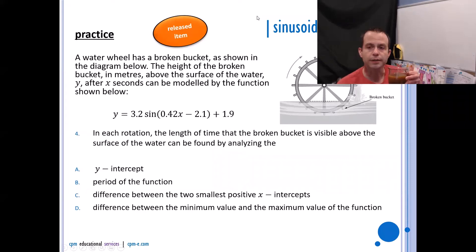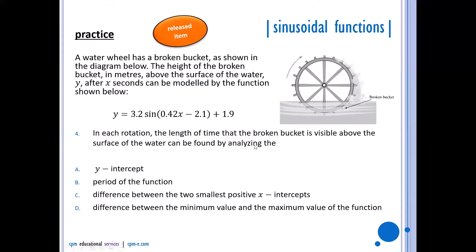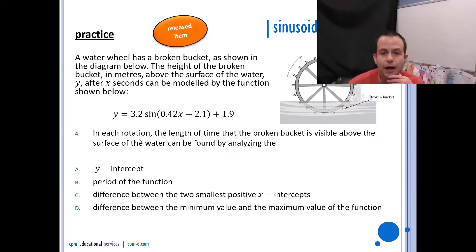The water wheel has a broken bucket as shown in the diagram below. The height of the broken bucket in meters above the surface of the water y after x seconds can be modeled by the function y equals 3.2 sin(0.42x - 2.1) + 1.9. In each rotation, the length of time that the broken bucket is visible above the surface of the water—so if you're having a hard time with the visual of this, what you want to do is just put it in your graphic calculator and get a picture of it.